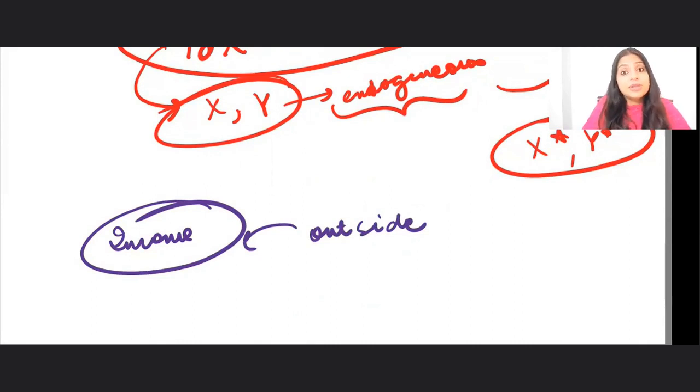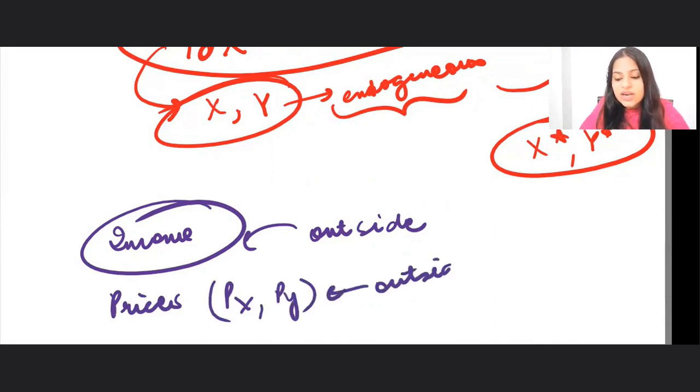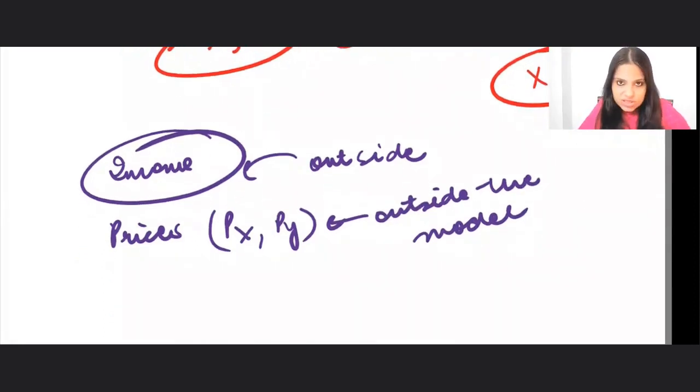Take, for example, the prices, px and py. So, the factors that are determined outside the model are exogenous factors. In our case, it is income, px and py.